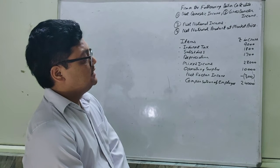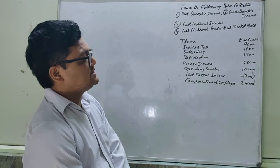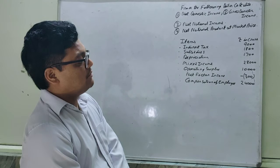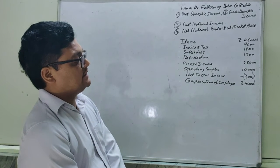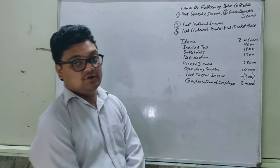Items given: indirect tax 9000, subsidies 1800, depreciation 1700, mixed income 28000, operating surplus 10000, net factor income from abroad minus 300, compensation of employees 24000.